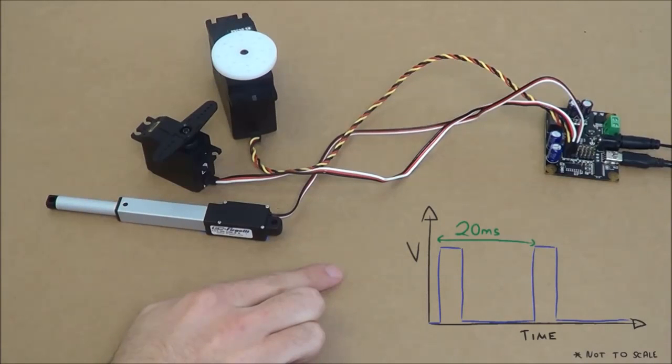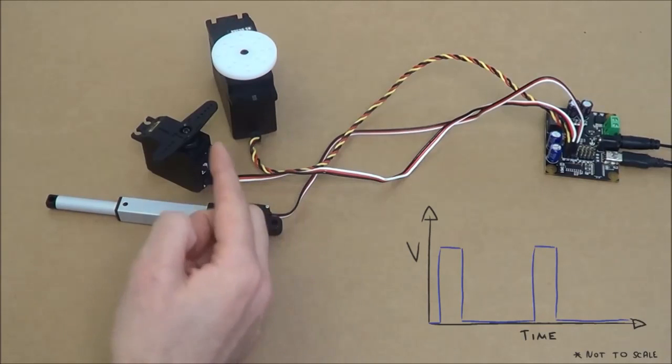These pulses come every 20 milliseconds, or at a frequency of 50 hertz. And it's the width of these pulses that determines the angular position of the shaft of the servo.